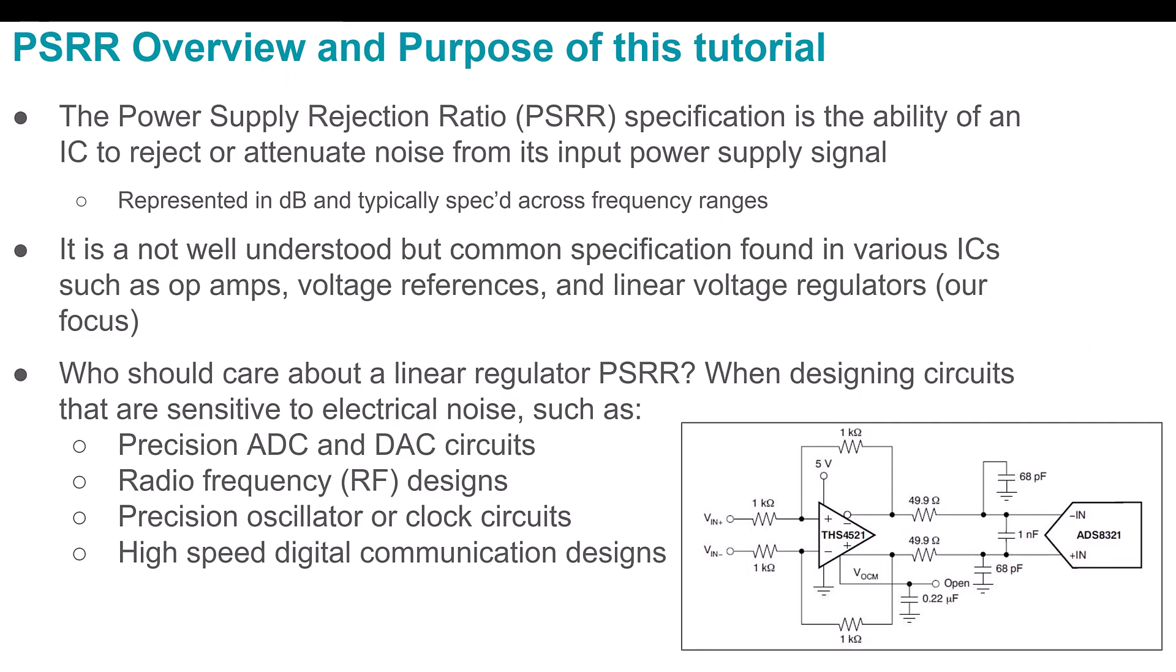Okay, so what is the power supply rejection ratio specification or PSRR? Well, it's an integrated circuit's ability to reject or attenuate noise from its input power supply signal so that noise doesn't get on its output signal, whatever that output signal is. And this is a common specification that you'll find on various ICs, including operational amplifiers, voltage references, and linear regulators. But I found that it's often not well understood.